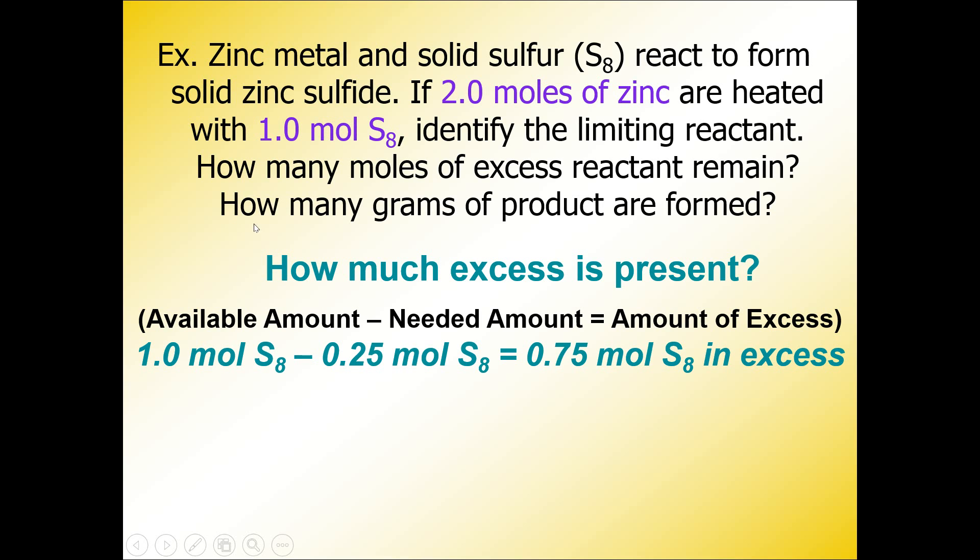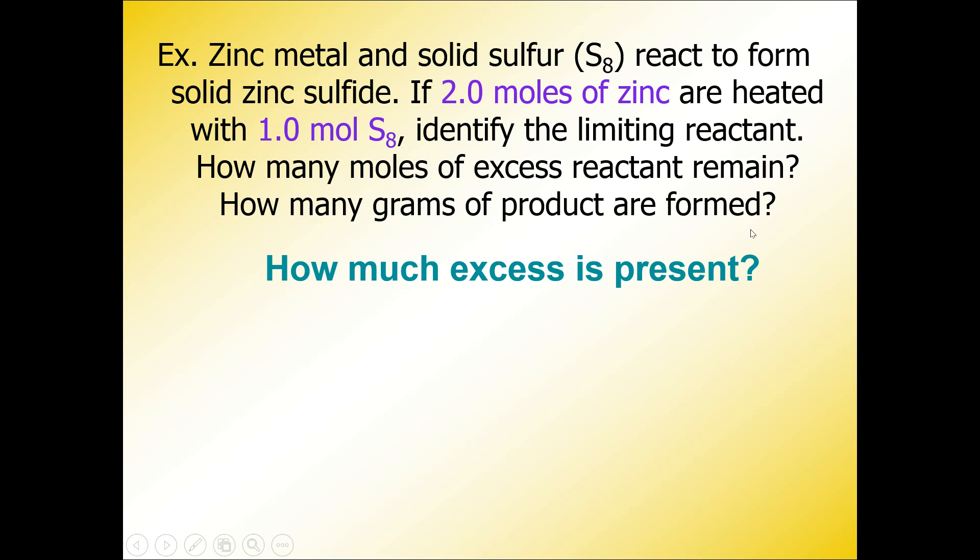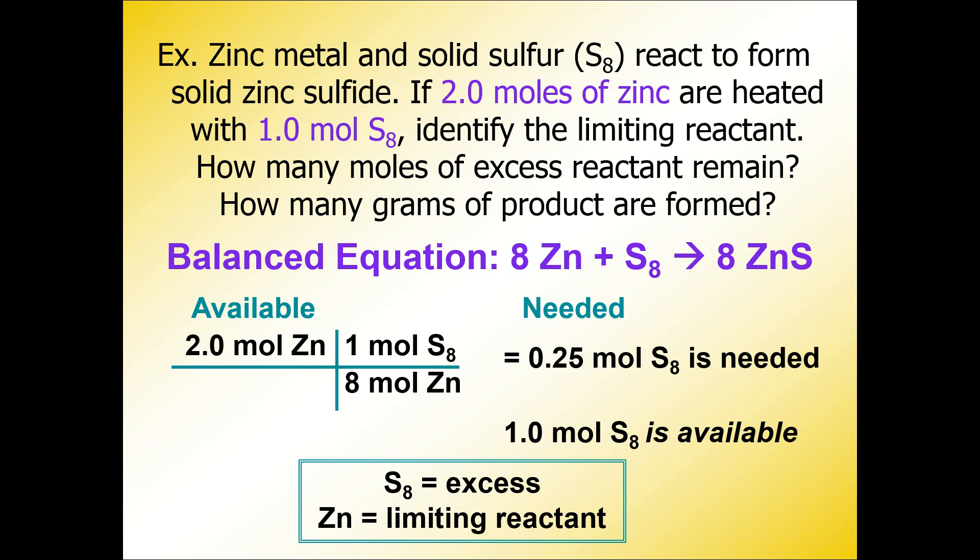The last part of the problem asks you to calculate the mass of product that is formed. I'm going to go back one slide so we can look at the equation again. We are going to calculate how many grams of ZnS is formed, and the starting point of our GWR problem is going to be the amount of limiting reactant available. There is 2.0 moles of zinc available and zinc is the limiting reactant.